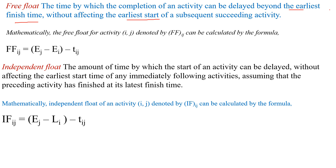Independent float is the amount of time by which the start of an activity can be delayed without affecting the earliest start time of any immediately following activities, assuming that the preceding activity has finished at its latest finish time. Mathematically, independent float equals Ej minus Li minus Tij, where Ej is the earliest time at event j and Ei is the earliest time at event i.